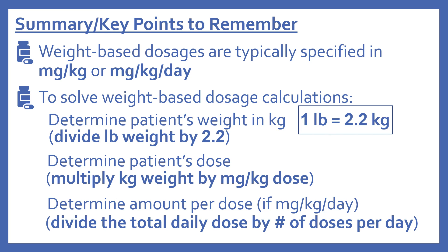In summary: weight-based dosages are typically specified in mg/kg or mg/kg/day. To solve, first determine the patient's weight in kilograms — remember 1 kg = 2.2 lbs, so divide the pound weight by 2.2. Next, determine the dose by multiplying kg weight by the mg/kg dose. Then, if the dosage is mg/kg/day, determine the amount per dose by dividing the total daily dose by the number of doses per day.